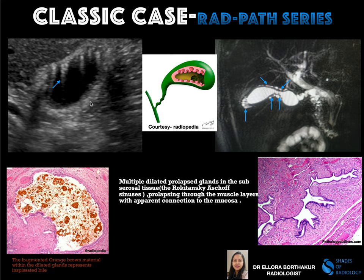You can see a gallbladder on ultrasound with multiple ring-down artifacts along the gallbladder wall. The same patient underwent MRCP, where you can see multiple cystic areas along the wall of the gallbladder. There was no significant abnormality in the bile ducts, common CBD, or even the duodenum.